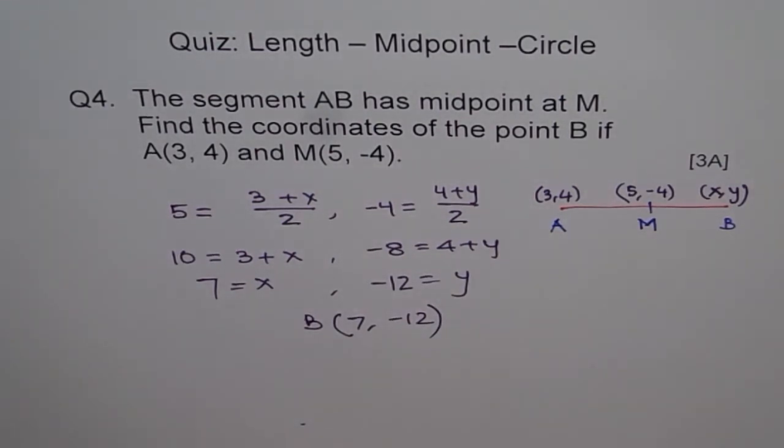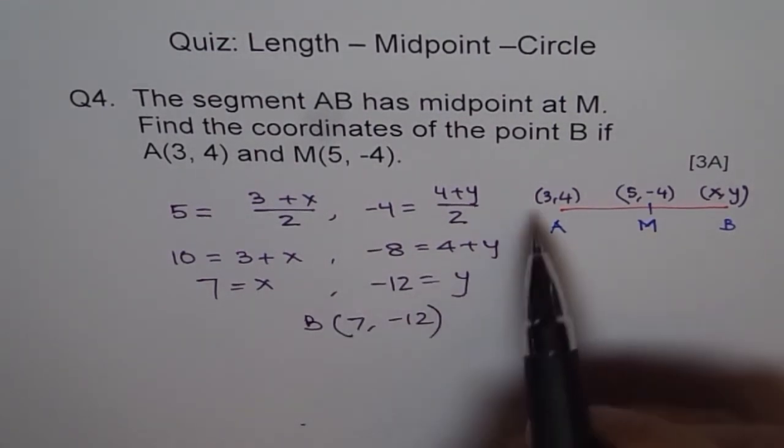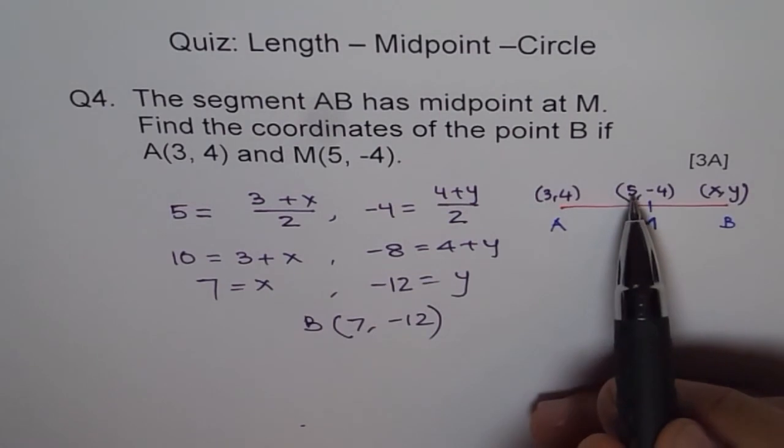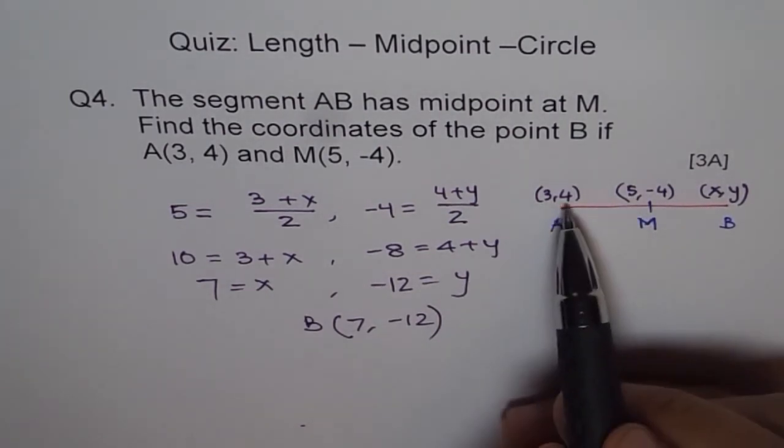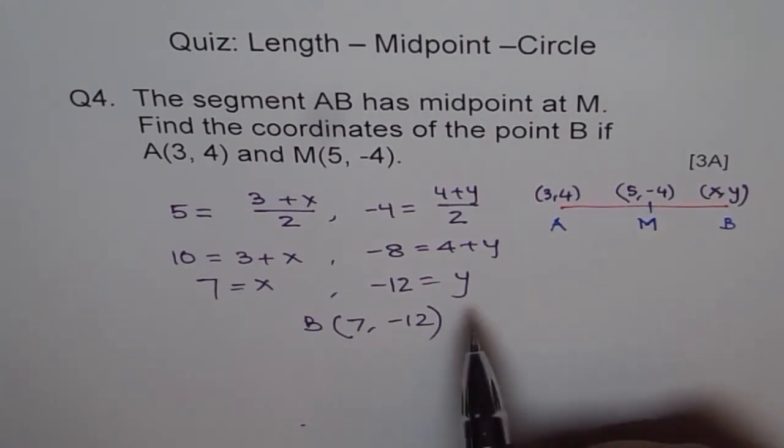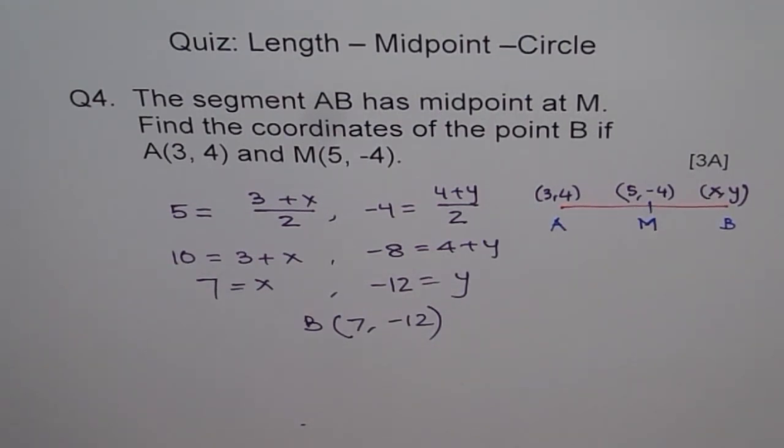You can verify your result. 7 + 3 is 10. 10 divided by 2 is 5. -12 + 4 is -8. -8 divided by 2 is -4. This is a very good problem. And I have seen very few students getting it right. So slowly we are moving on to slightly tougher questions. First 3 were very simple questions. Okay. Now be alert. Thank you.